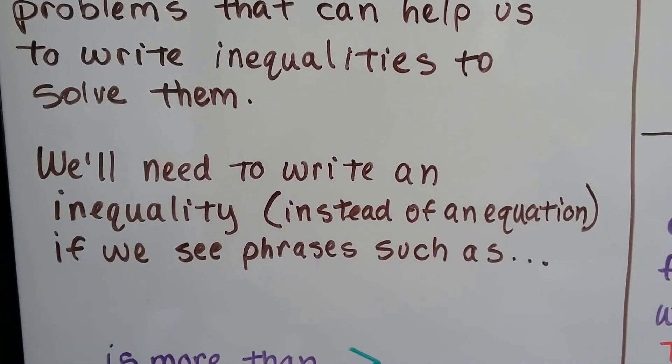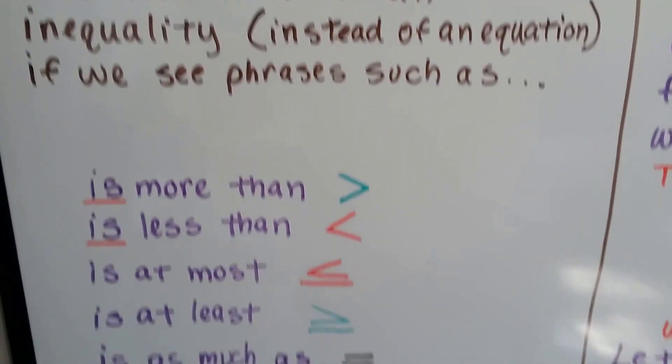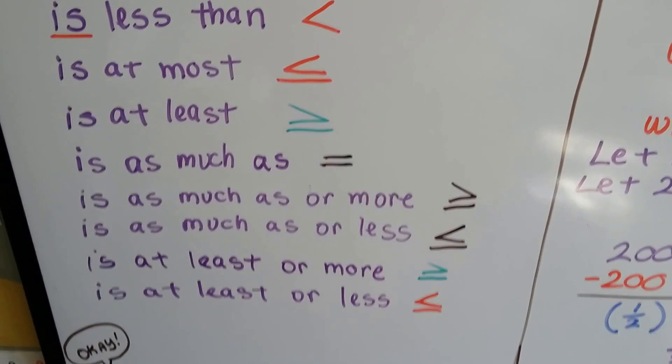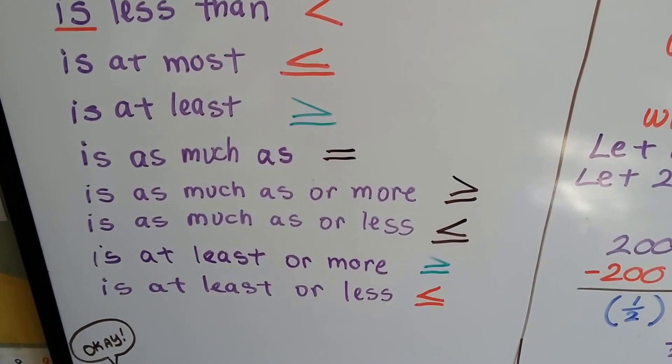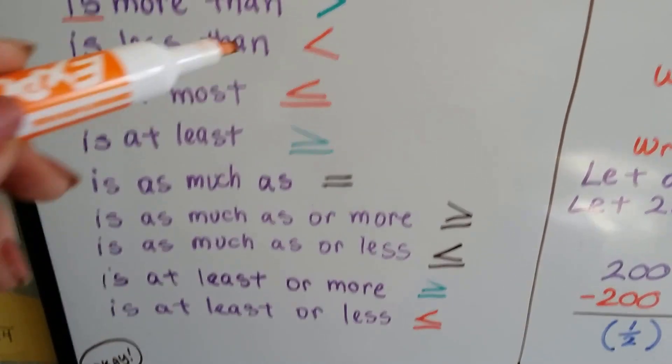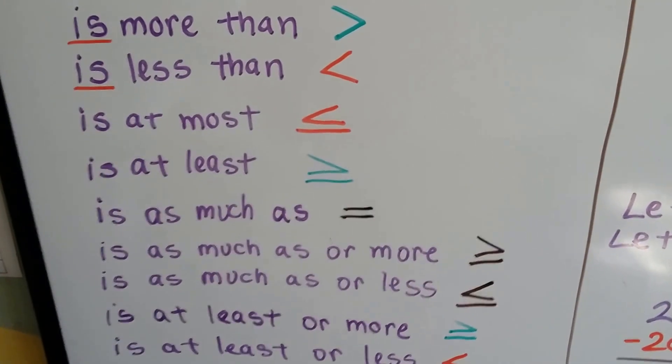We'll need to write an inequality instead of an equation if we see phrases such as: is more than, is less than, is at most, is at least, is as much as, is as much as and more or less, is at least or more, or at least or less, and these are the signs that will go along with these phrases. We talked about that in the last video.